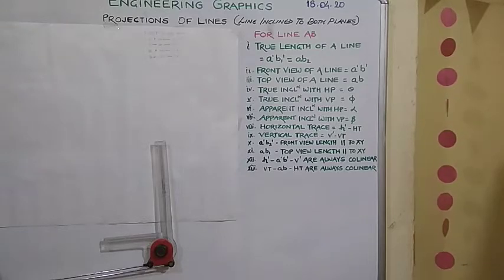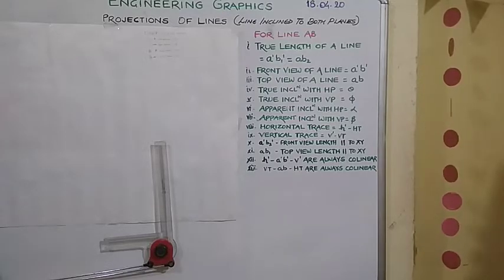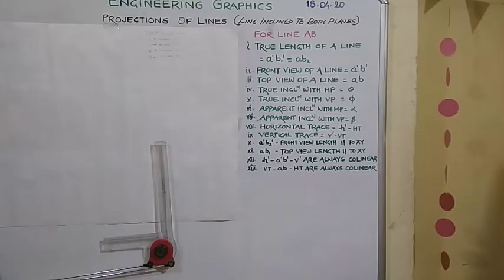Now, the statement for this particular problem is like this. The distance between the end projectors of a straight line AB is 60 mm, point A is 10 mm above HP and 30 mm in front of VP, point B is 40 mm above HP and 50 mm in front of VP. Draw the projections and find the inclination of straight line AB with HP and VP. Also, find true length of the line and show the traces of line.